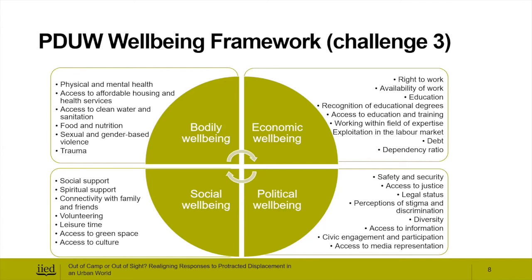Social wellbeing includes social support, spiritual support, connectivity with family and friends, volunteering, leisure time, access to green space, and access to culture. Political wellbeing covers safety and security, access to justice, legal status, perceptions of stigma and discrimination, diversity, access to information, and civic engagement and participation.